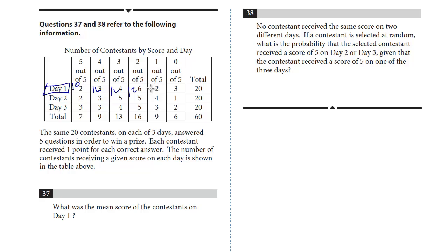Two contestants received a one, that's a two. And this one, it's a score of zero, so it doesn't matter how many contestants, it's still zero.